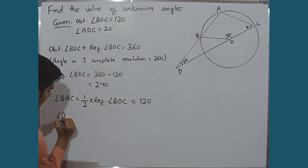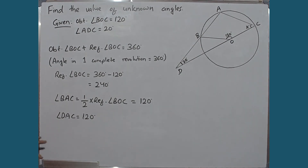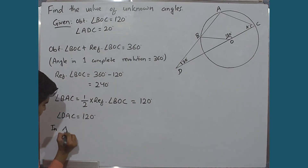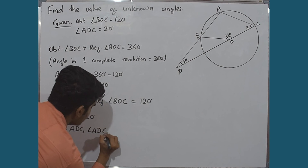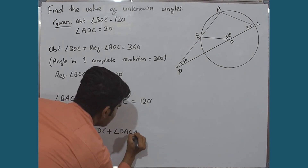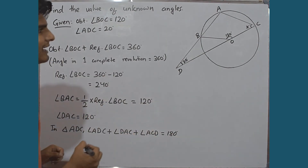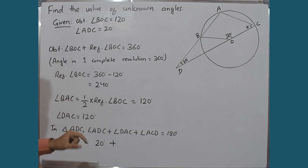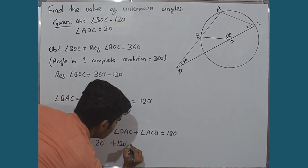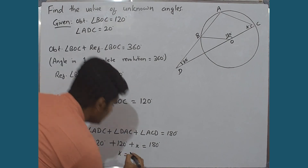Similarly, angle DAC equals 120 degrees. In triangle ADC, the sum of all angles equals 180 degrees. So angle ADC plus angle DAC plus angle ACD equals 180 degrees. Substituting: 20 degrees plus 120 degrees plus X equals 180 degrees. Therefore, X equals 40 degrees.